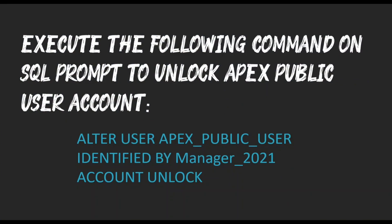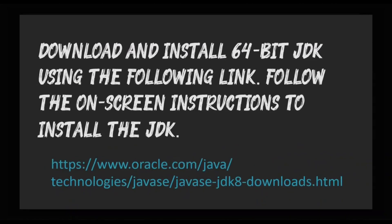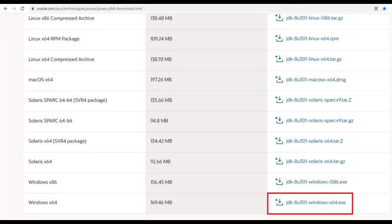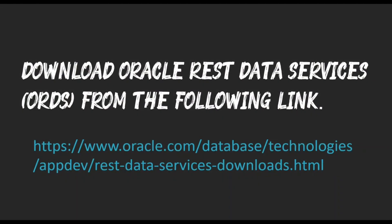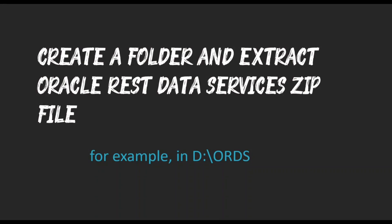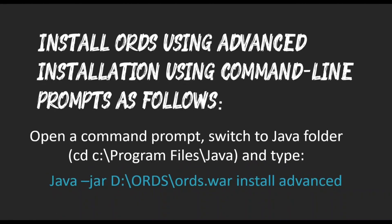Execute the following command on the SQL prompt to unlock the Apex Public User account. Download and install 64-bit JDK using the provided link. Follow the on-screen instructions to install the JDK. The link is also available in the video description below. Download Oracle REST Data Services from the provided link, also in the video description. Create a folder and extract the Oracle REST Data Services zip file, for example, D:\ORDS. Install ORDS using advanced installation via command-line prompts: open a command prompt, switch to the Java folder, and type the command shown in blue. In this tutorial, we are using manager_2021 as the password for every account; however, you can use different complex passwords.